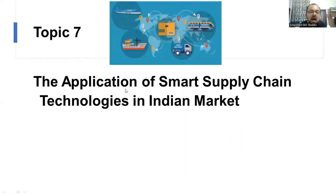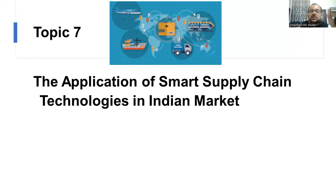Topic number seven is the application of smart supply chain technologies in the Indian market — how smart supply chain technologies influence the Indian market. First of all, you have to understand the current scenario of the Indian market and analyze what are the new trends. This is one of the important topics especially for business management students. Anybody pursuing MBA who is going for any kind of presentation can make use of this current topic. You will be getting a lot of information from different papers. Try to gather the papers — at least five to ten papers — and from that you can grab the information.